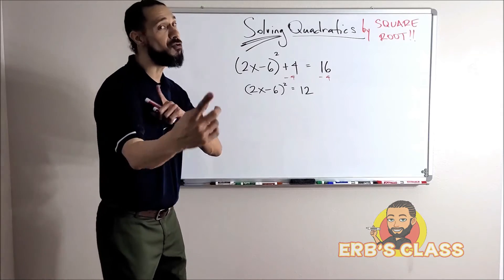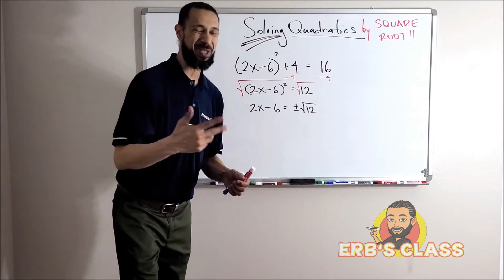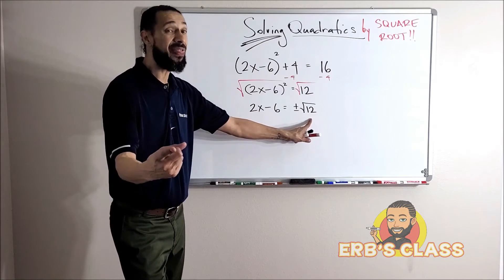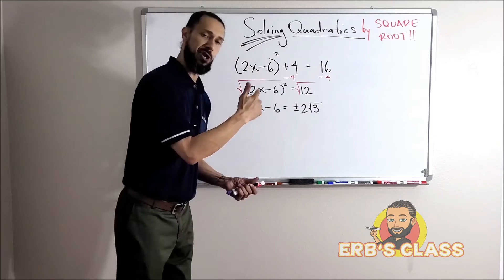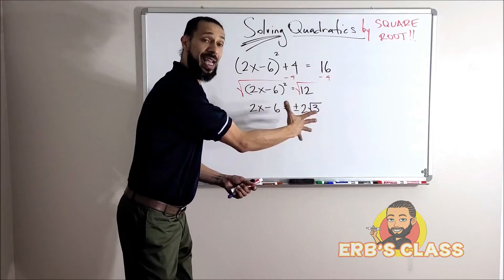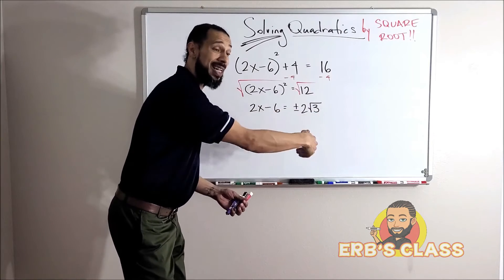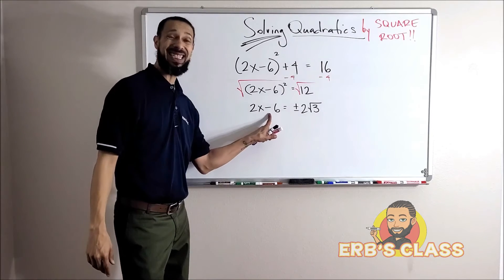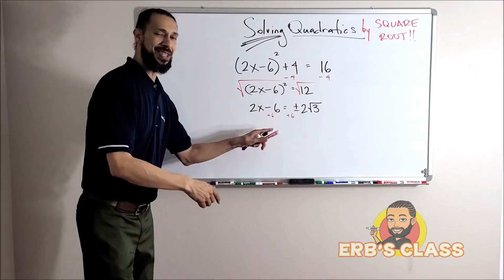Good. Square root. Oh okay, plus or minus square root of 12. Can that be simplified though? I think it can. Yeah, remember I'll break that 12 down into two times two times three, and then I take a pair of twos out. Watch that video.